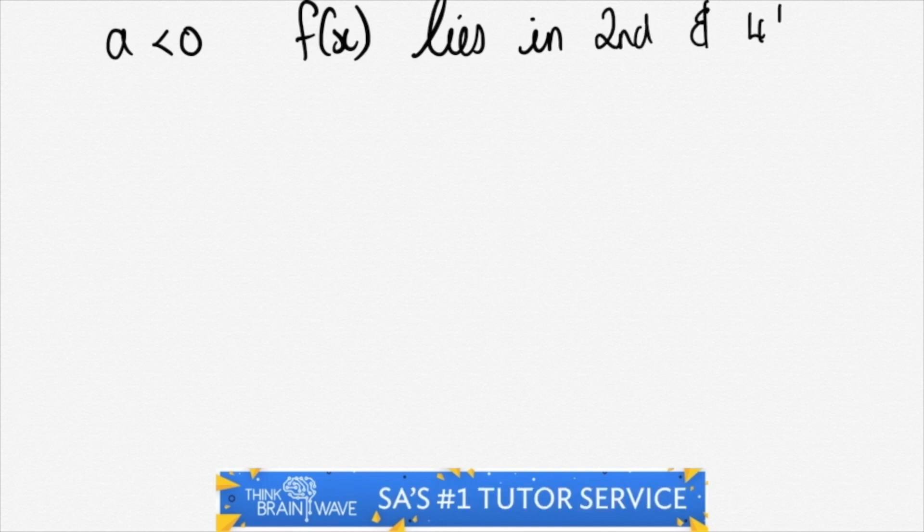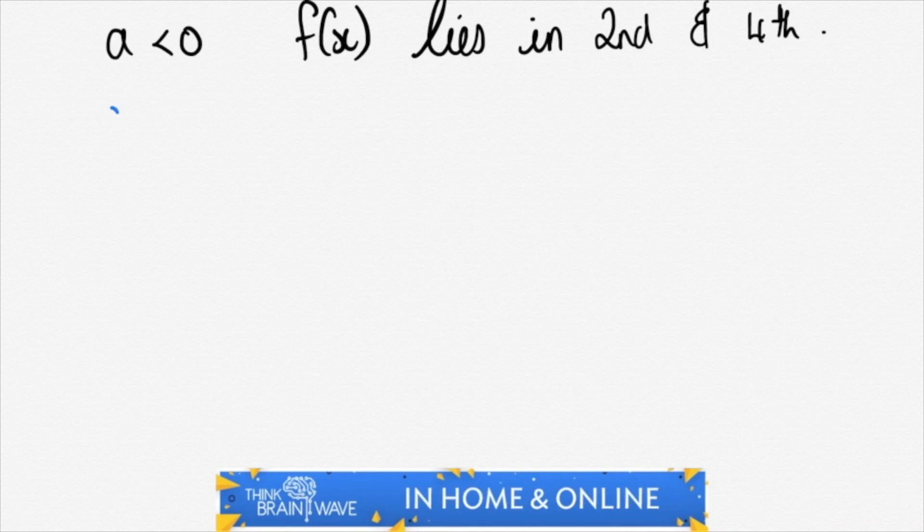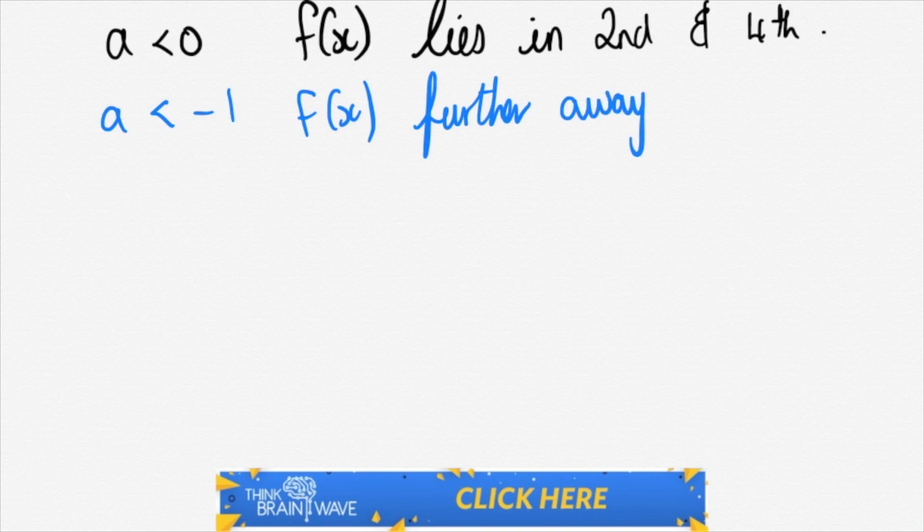Let's do the situation where you've got a is less than 0 or actually known as negative. When this is the case, the function lies in the second and fourth quadrant. So that's top left and bottom right.